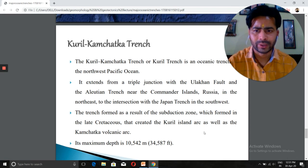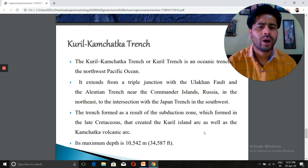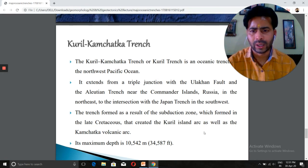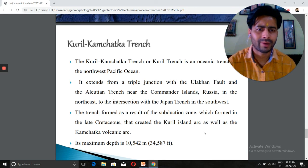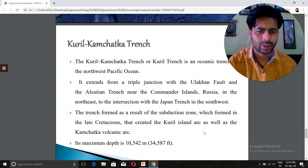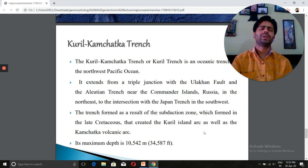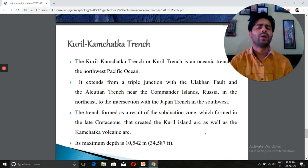The Kuril-Kamchatka Trench in the northwest Pacific Ocean is situated at the extreme from the triple junction with the Aleutian Trench near the Commander Islands, Russia, to the northeast to the intersection with the Japan Trench in the southwest. The trench formed as a result of a subduction zone which was found in the late Cretaceous that created the Kuril island arc as well as the Kamchatka volcanic arc. Maximum depth is 10,542 meters. These are some examples of marine trenches.